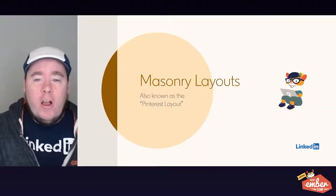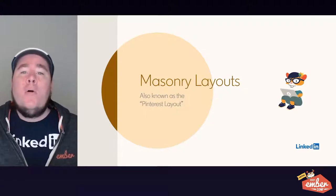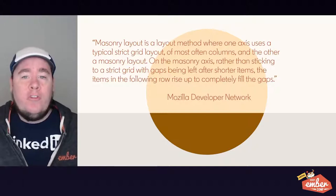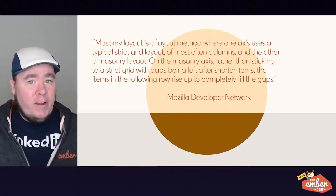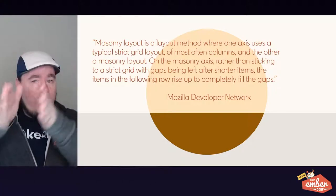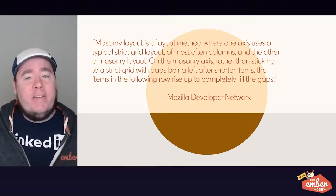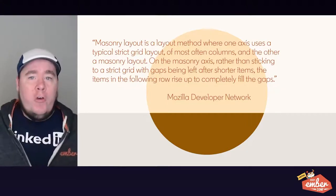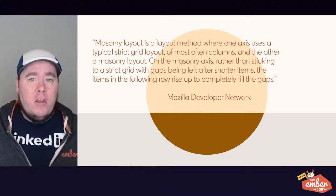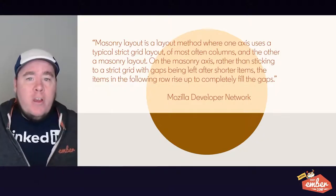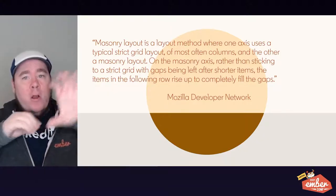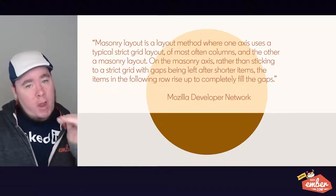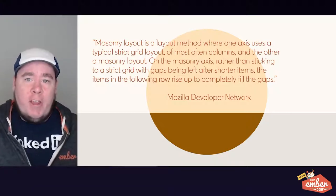Now, let's talk a little bit about masonry layouts, which you may know as the Pinterest layout. A masonry layout is similar to a strict grid layout, where one axis does have that very strict grid setup, but the other axis — the masonry axis — eliminates any space between items instead of sticking to that strict grid. Usually this is vertical space, so that you have a nice layout where no matter how tall each item is, the next item below it comes up right underneath it without any major gaps.